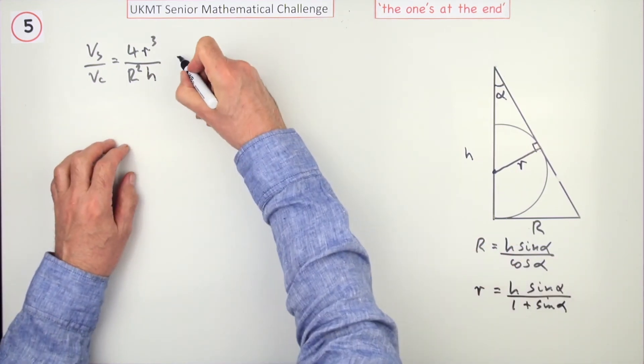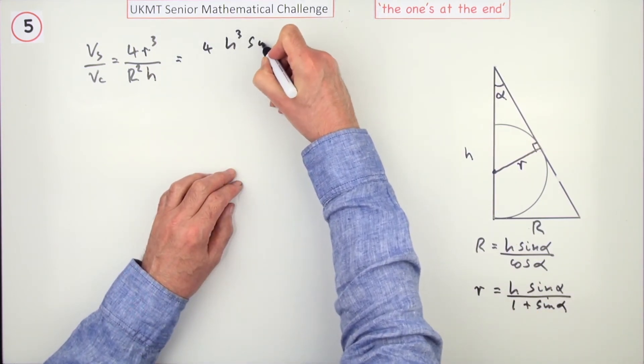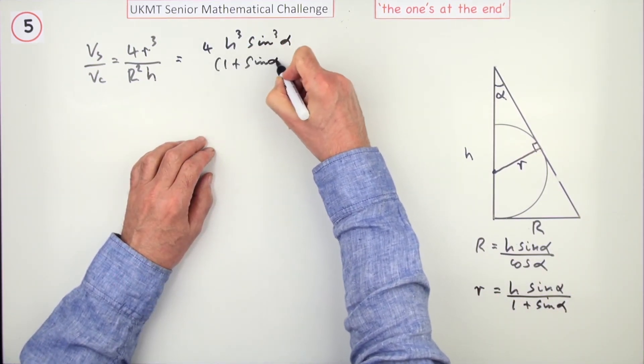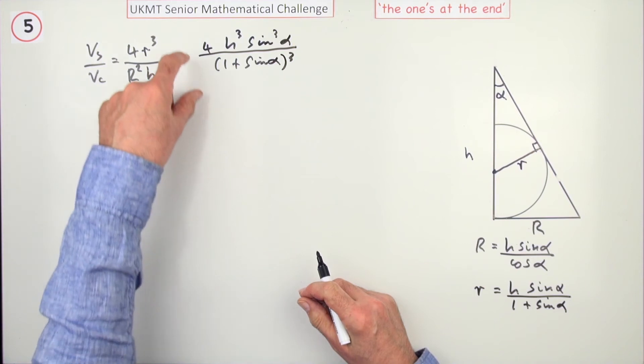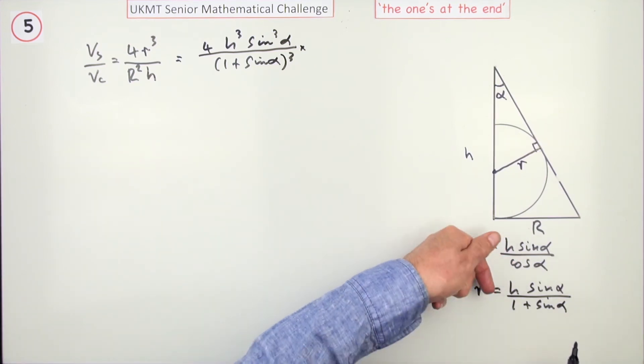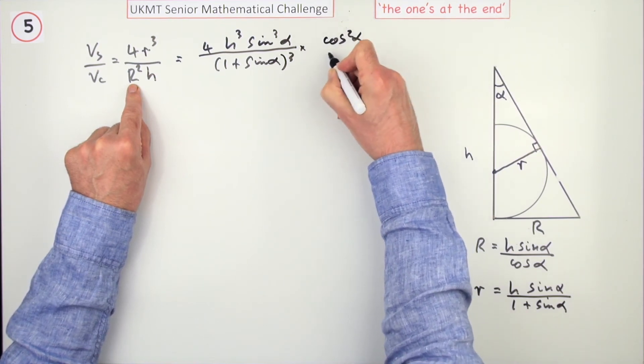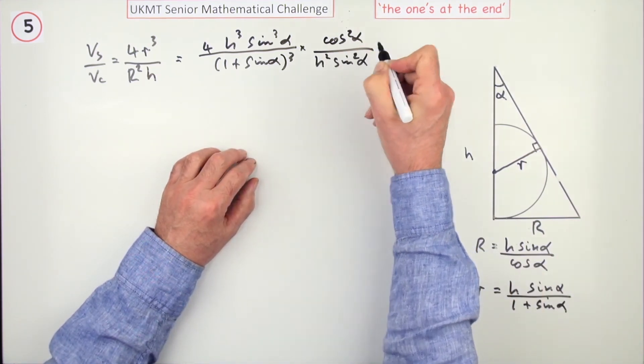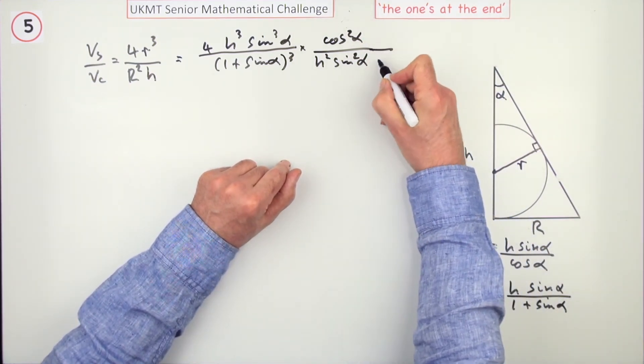Right, so just moving them all the way to get a bit of room. So popping them in, you'll have four times - now R will be cube this, so that will be H³ sin³ α, but unfortunately over (1 plus sin α)³. Now I don't really want to have a fraction over a fraction. So instead of dividing by this, I think I'll multiply by its reciprocal. So I'll be writing this upside down then, so I'll go cos α on top, but it's been squared. So cos² α over, and then it will be squaring this because it's R², H² sin² α. And there's another H that would appear underneath, so that will also be under here. So I'll say times H.